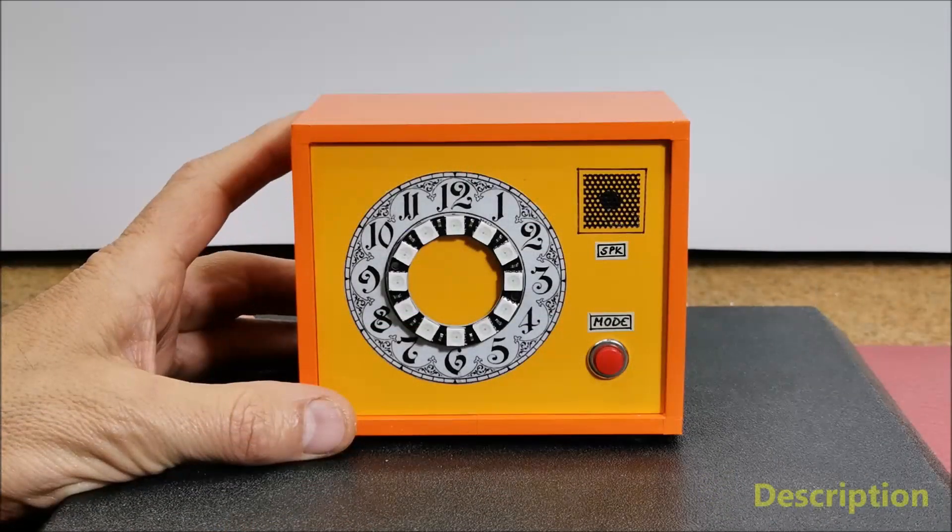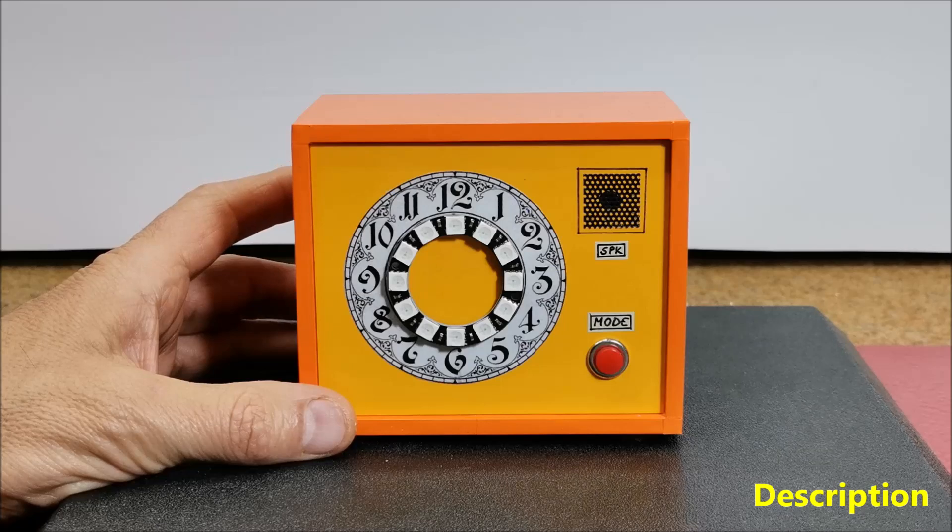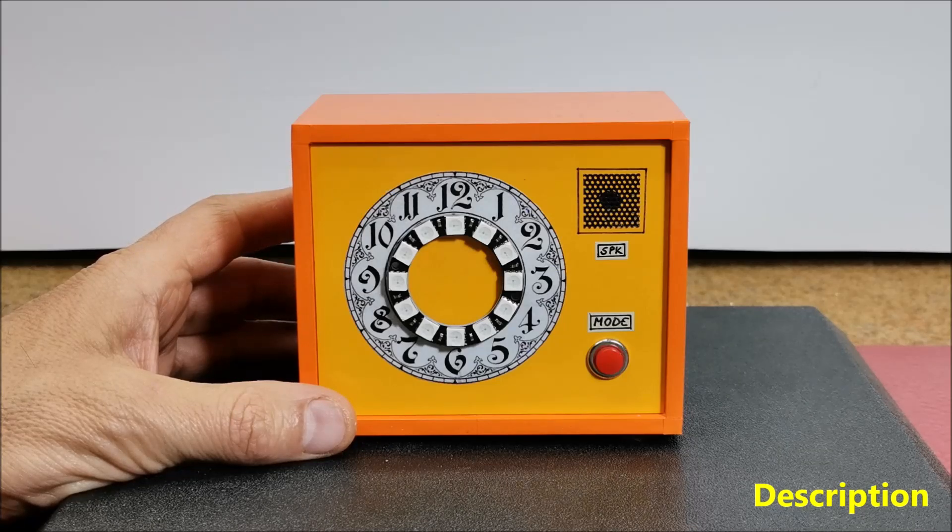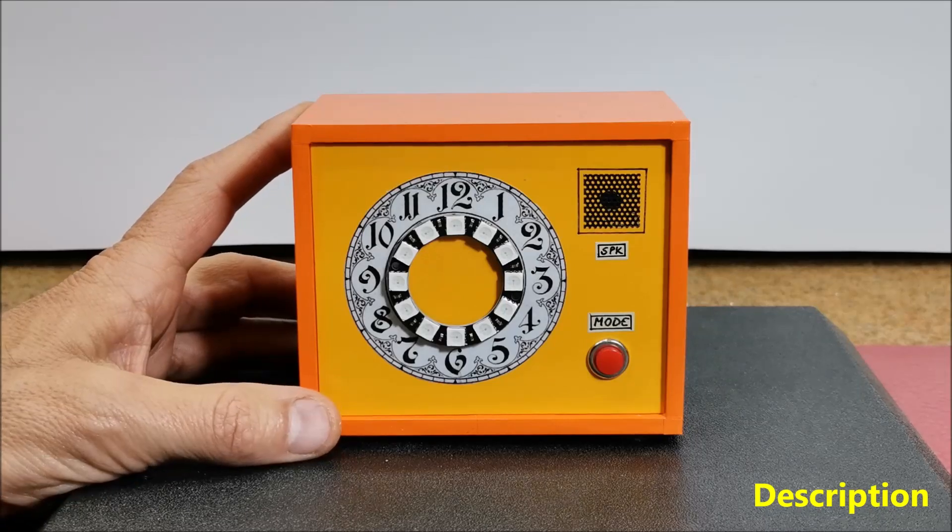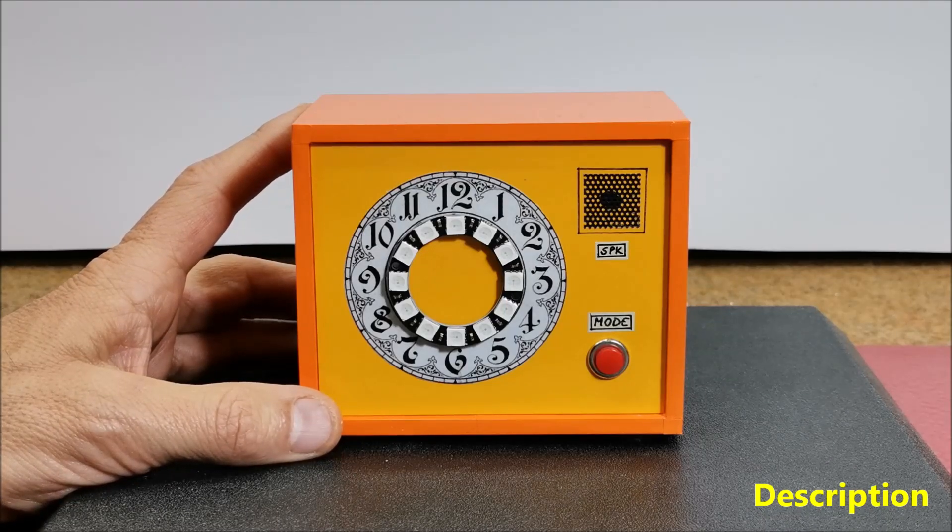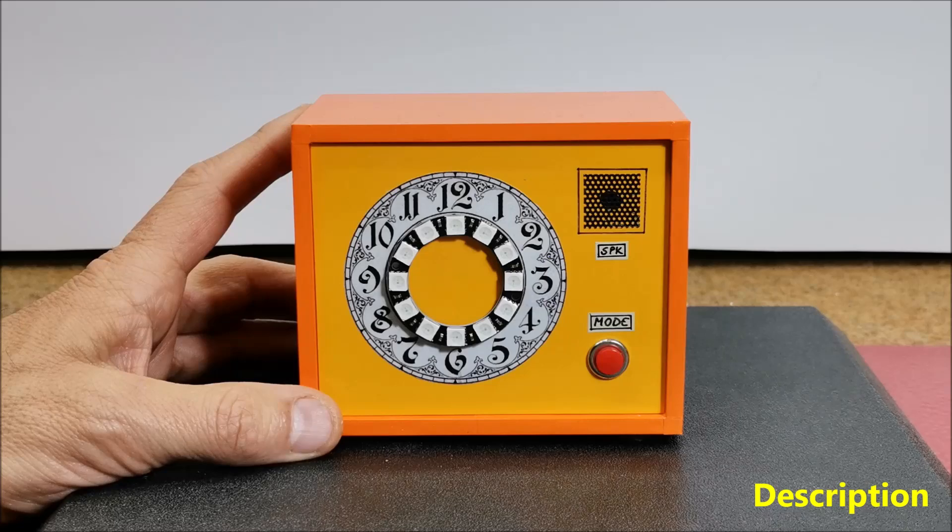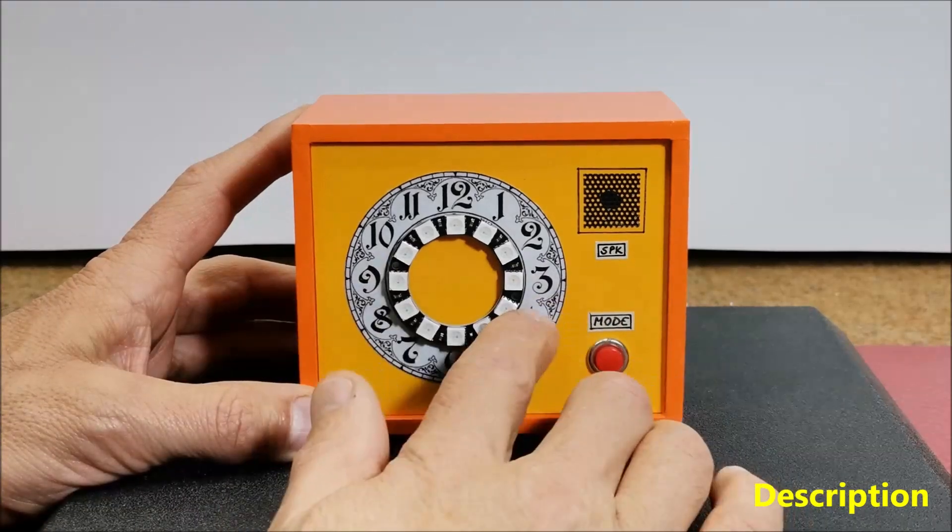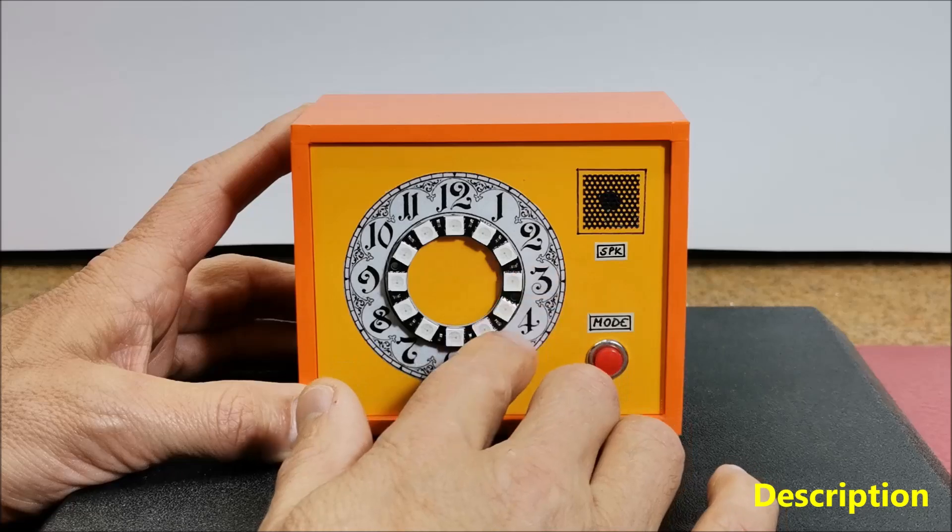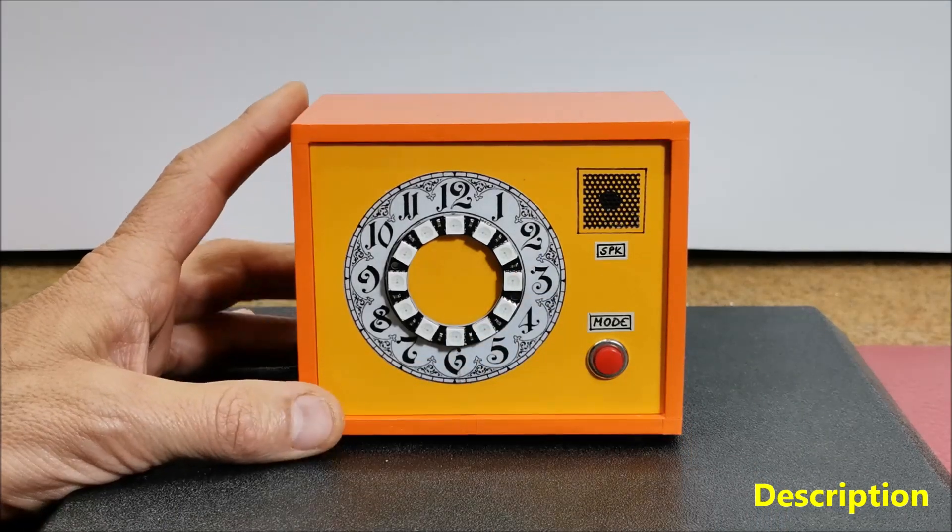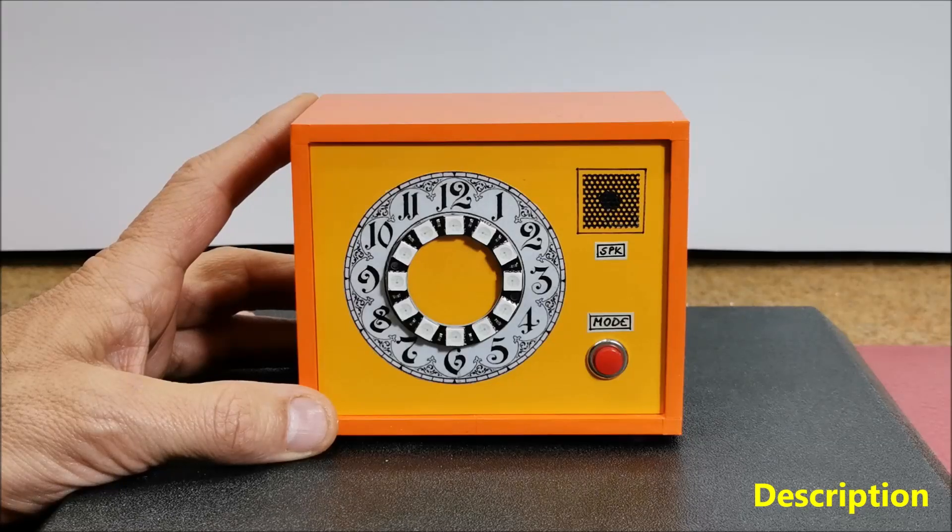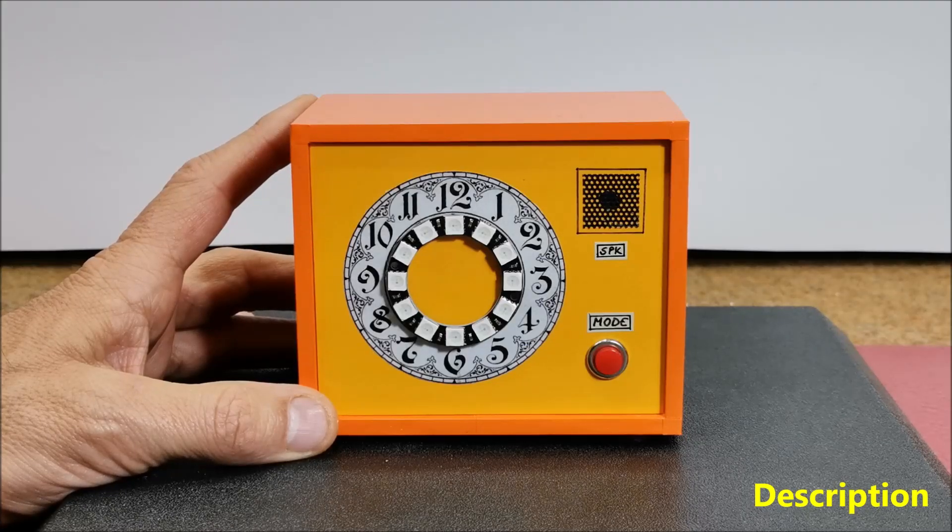Hello, there are many Arduino clock projects with temperature and humidity readings where the results are usually displayed on some kind of display. This time I will show you how to make such a device where instead of a display an addressable WS2812B pixel ring with 12 LEDs is used. This is another in my series of unusual clocks which you can see in the given playlist.